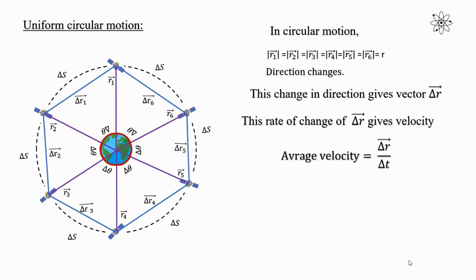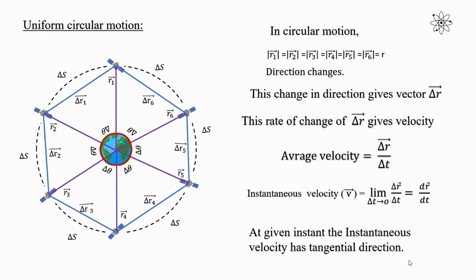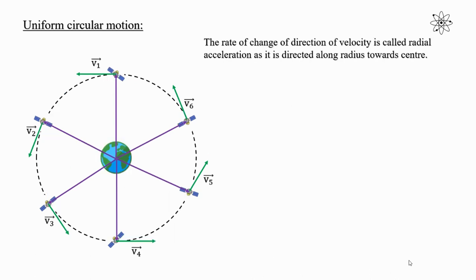To find the instantaneous velocity of the satellite, we have to take the limit of average velocity as delta t tends to 0, which is equal to vector dr/dt. At a given instant, the instantaneous velocity has a tangential direction. The vector v1 represents the instantaneous velocity at that point. Similarly, other velocity vectors can be drawn. The rate of change of direction of velocity is called radial acceleration, as it is directed along the radius towards the center.